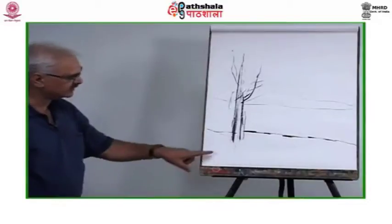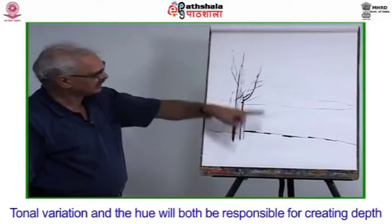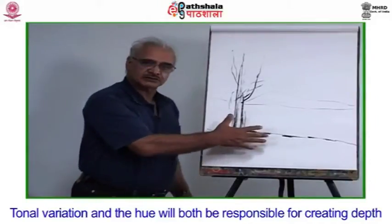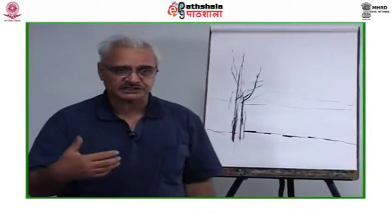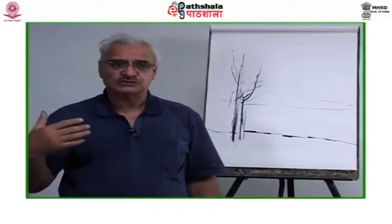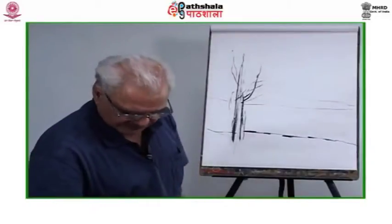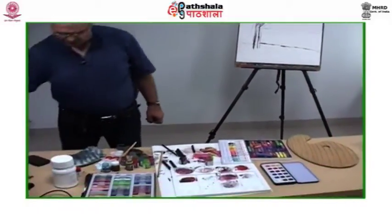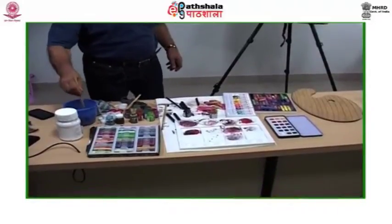The same rule is applicable when we add color to the landscape. Tonal variation and hue will both be responsible for creating depth. Think which colors applied in the foreground and background will immediately create distance and depth. Warm colors applied in the foreground push things behind and create distance, as the eye catches a strong warm color first before any other.